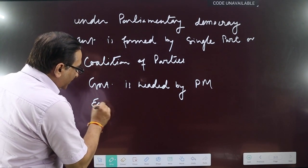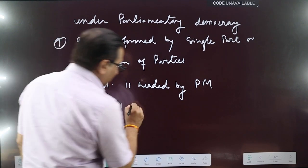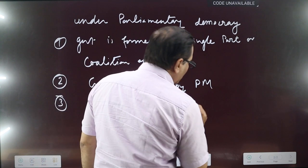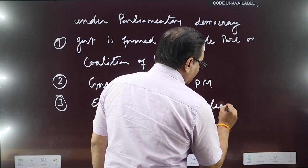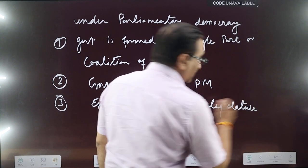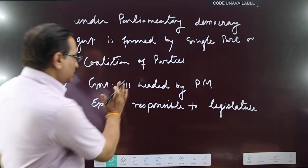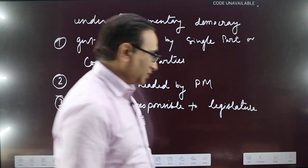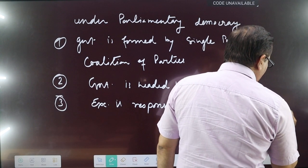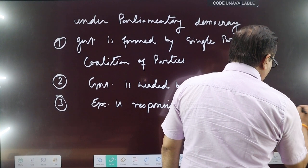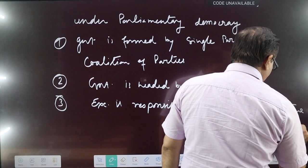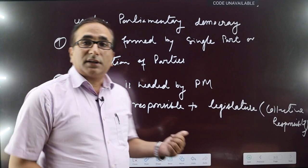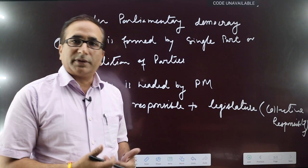Third, the executive is responsible to the legislature. And this responsibility is collective responsibility. It means the executive is collectively responsible to the Parliament or legislature.